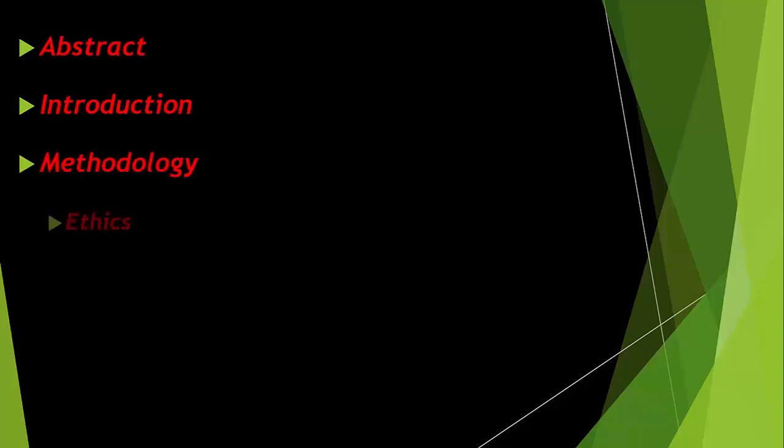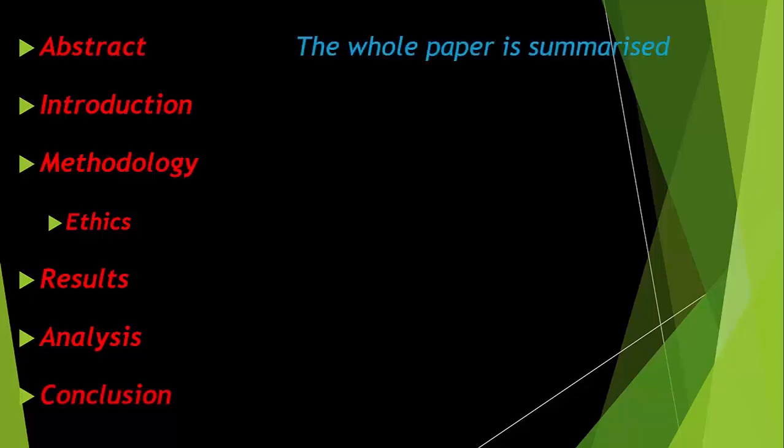First there's the abstract, then the introduction, then the methodology. Somewhere around here will be the ethics. Then there'll be the results followed by the analysis and finally the conclusion. The abstract is simply a one page or one paragraph summary of the entire research paper. The introduction is where the research question is justified by presenting a review of the relevant literature in order to establish the gap the evidence or knowledge base that the current paper is now about to fill.